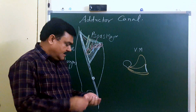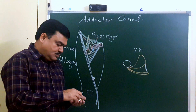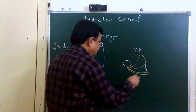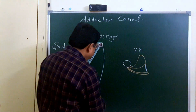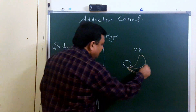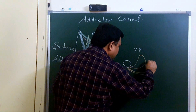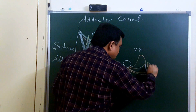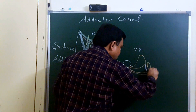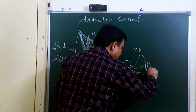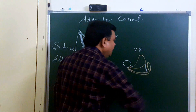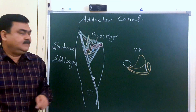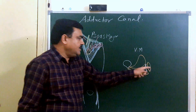This canal lies deep to sartorius. Here is the sartorius muscle — here is the position of the sartorius. So it is known as subsartorial canal because this muscle, sartorius, covers it.